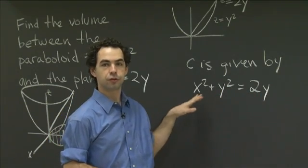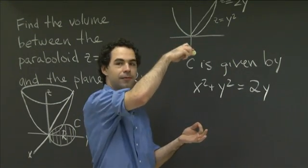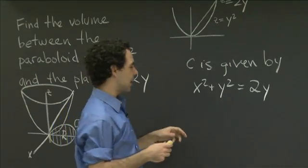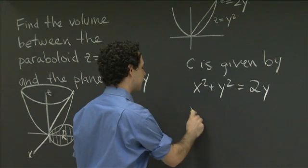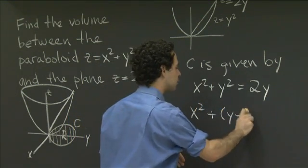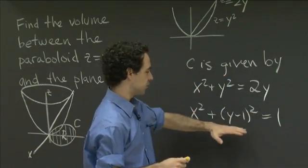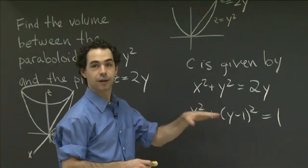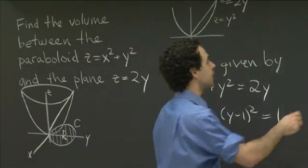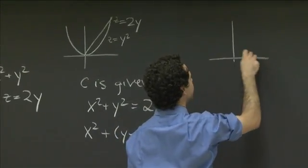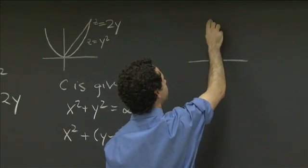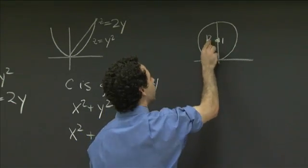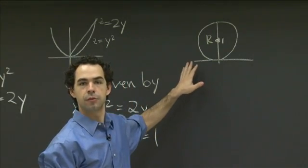Whenever x squared plus y squared equals 2y, that's a point (x, y) such that directly above it is where the plane intersects the paraboloid. A little algebra can help us sort that out. If you bring the 2y over and complete the square, you can rewrite this as x squared plus (y minus 1) squared equals 1 — I've added 1 to both sides and factored the y part. This is the equation of a circle with center (0, 1) and radius 1.